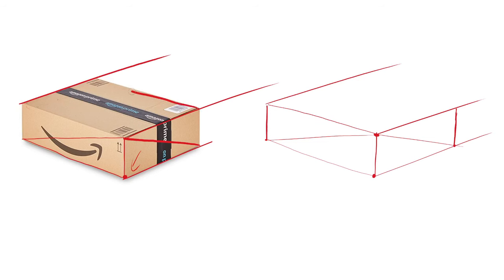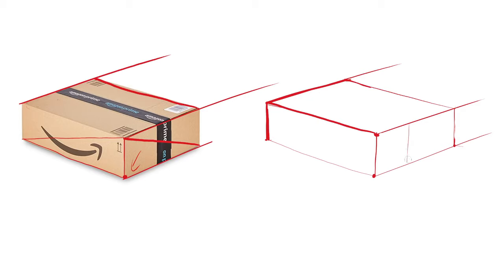The way I'd recommend practicing observation is by doing still life drawings. Grab an object — doesn't matter what it is, could be a really simple object — put it in front of you and try to draw it. Try to measure the proportions, pay attention to the angles, and try to find landmarks so you can accurately copy the still life. The more you practice this, the better you'll get at seeing.